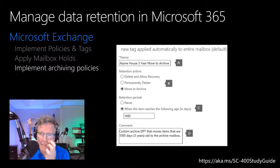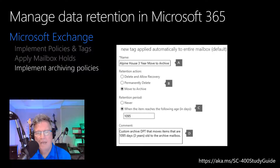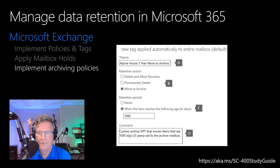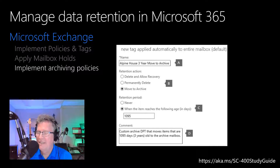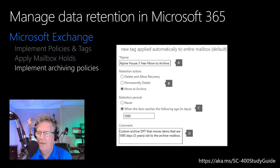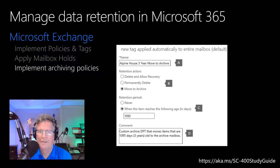In Microsoft 365, admins can create an archiving and deletion policy that automatically moves items to a user's archive mailbox and automatically deletes items from the mailbox. The admin creates a retention policy assigned to mailboxes that moves items to a user's archive mailbox after a certain period of time, and also deletes items from the mailbox after they reach a certain age limit. The actual rules that determine what items are moved or deleted and when are called retention tags. Retention tags are linked to a retention policy that is in turn assigned to a user's mailbox. A retention tag defines how long a message remains in the mailbox and what action is taken when it reaches the specified retention age — it's either moved to the archive mailbox or deleted.